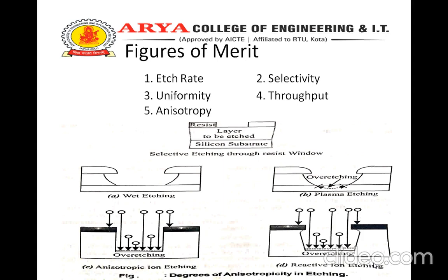Second is selectivity. Selectivity pertains to the ability of the etchant or etching system to attack the desired material layer, while at the same time not attacking or affecting other materials present on the wafer. In general, all chemical techniques are intrinsically more selective than physical processes. If different materials are bombarded by ions, a certain amount of sputtering could take place depending on the molecular weights of the materials involved. On the other hand, chemicals can be highly specific in their reactions. One material may be very strongly attacked by one chemical species, whereas another material could be completely unaffected. Selectivity is the ratio of etch rates of various materials.